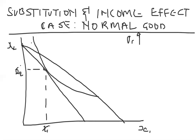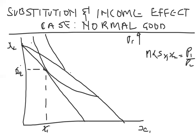This is the optimal choice — point A — when nothing has happened to the price. At that point, MRS of x1 and x2 equals the price ratio p1/p2. Now as a result of the fall in price, we have moved to a new indifference curve. I'll call this indifference curve zero and this indifference curve one.